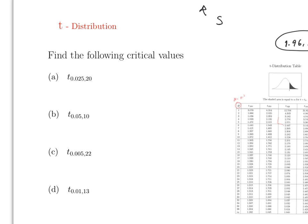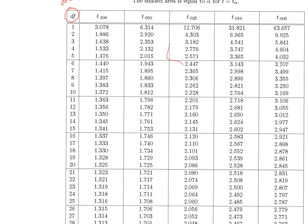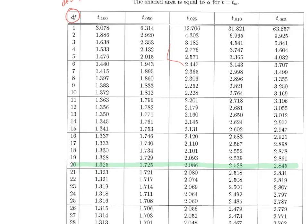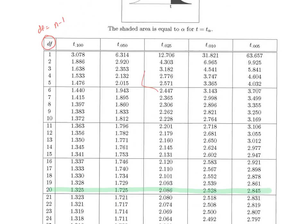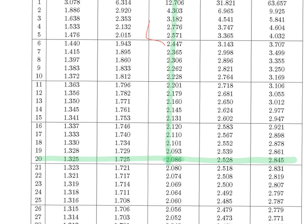For the first example, the notation shows alpha over 2 and the degrees of freedom. In this case the degrees of freedom is 20, which means n equals 21. Going to the t-table, look at the row for 20 degrees of freedom and the column for alpha over 2 equal to 0.025. The answer is 2.086.